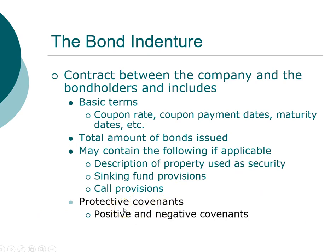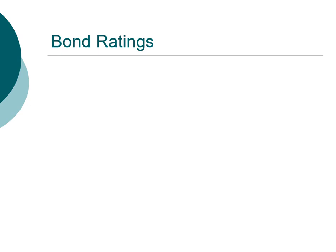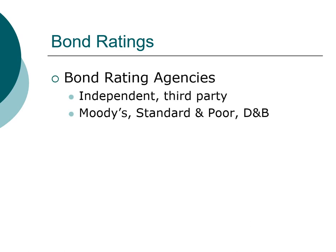Covenants are protective covenants designed to protect investors. There are positive covenants and negative covenants. Positive covenants are things the company must do — for example, the company must maintain a times-interest-earned ratio of a certain level. Negative covenants are things the company must not do — for example, a company must not pay dividends until it has paid off all interest obligations.